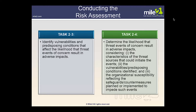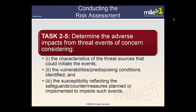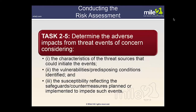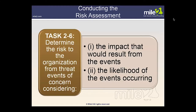Task 2-5 determines the adverse impacts of threat events, considering the characteristics of threat sources, vulnerabilities and predisposing conditions identified, and susceptibility reflected in safeguards and countermeasures. Note that Task 2-4 is about likelihood and Task 2-5 is about impact of these threat events — likelihood versus impact. Task 2-6 determines the risk to the organization from threat events of concern, considering both the impact that would result from the event and the likelihood of the event occurring.